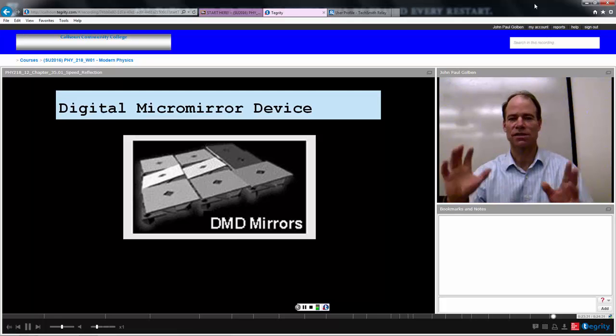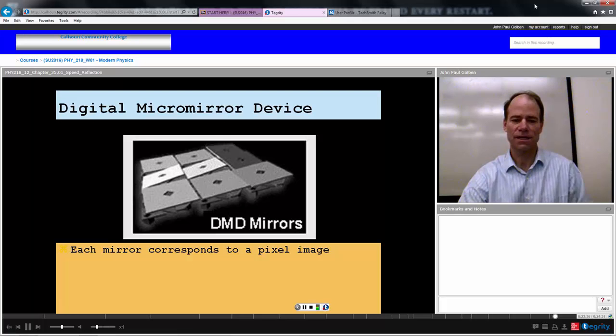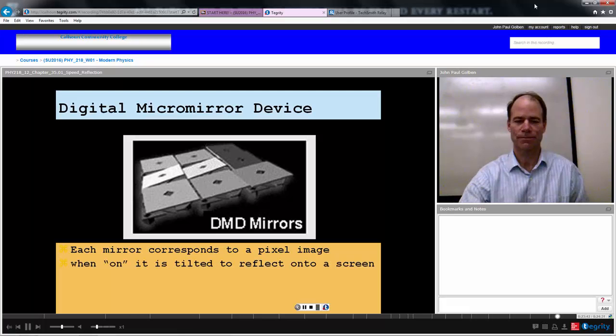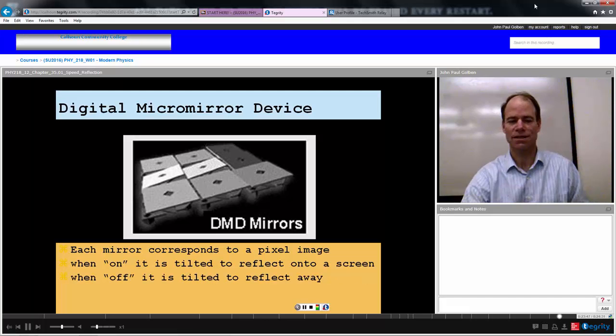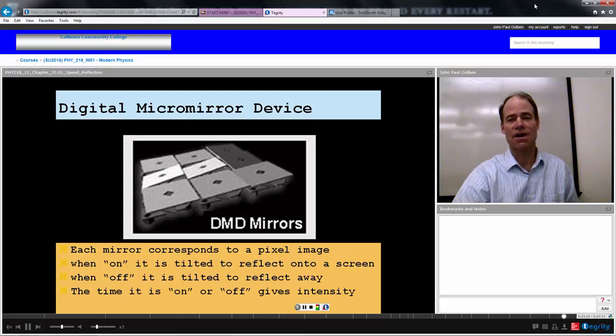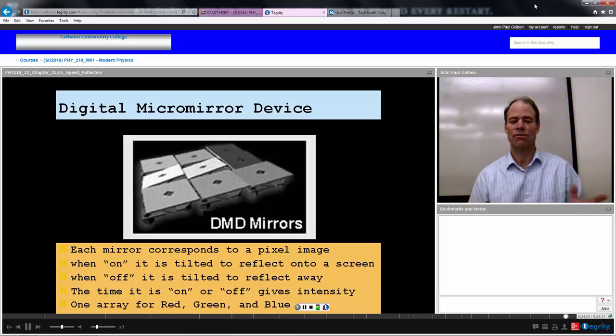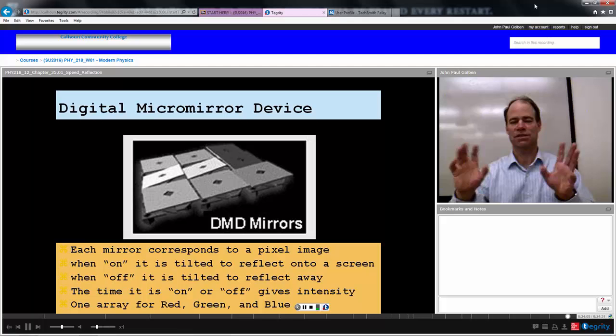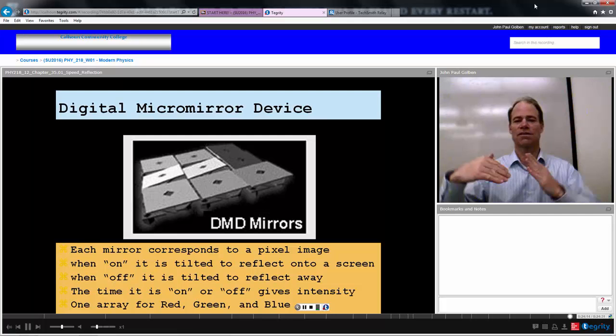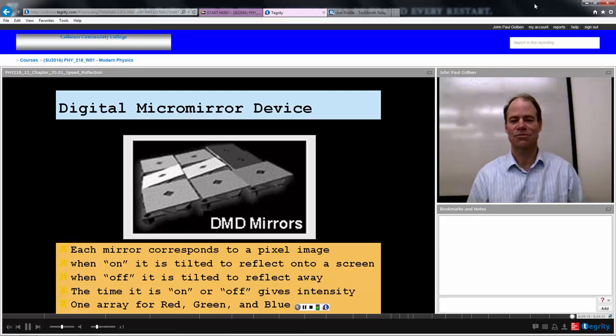Another application of reflectors is DMD mirrors that might be used, say, for projection in a movie theater. Each mirror of this DMD design corresponds to a pixel in an image that you're trying to create. When it is on, it is tilted to reflect onto a screen, and when it's off, it is tilted to reflect away using specular reflections. So you can start creating your pixel image on the screen. The time it's on or off will give you intensity, and there's one array for red and one array for green and one array for blue, so you can actually create a color image of pixelated pixels on your screen using reflection of all these little mirrors. A very interesting device, a nice way to recreate an image onto a large external screen.